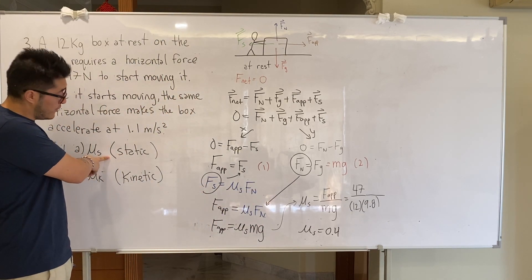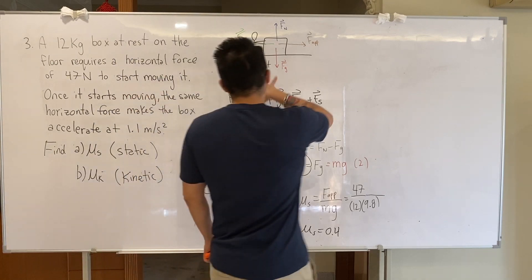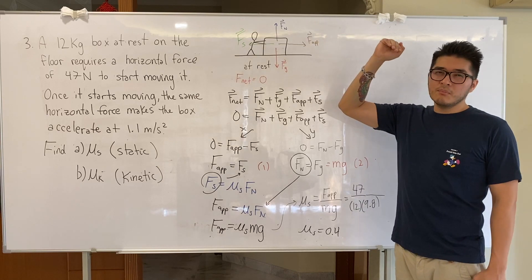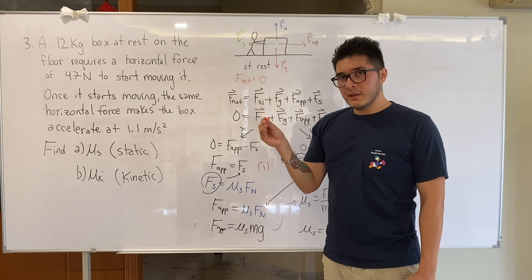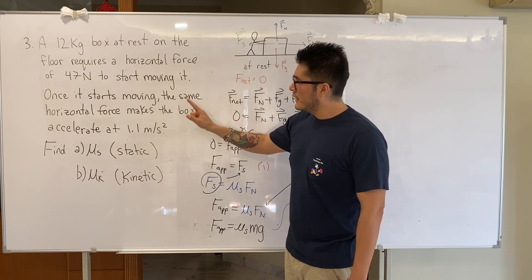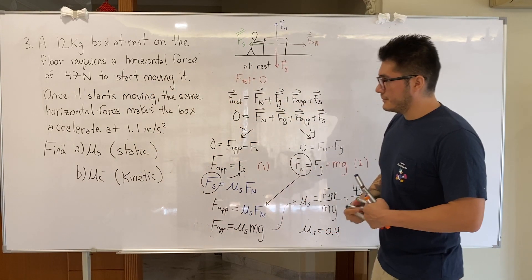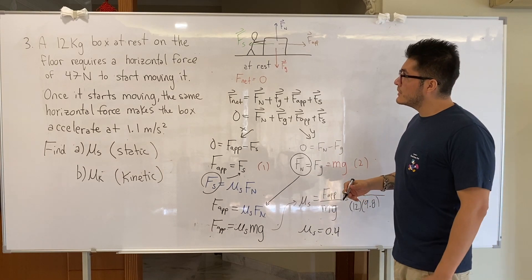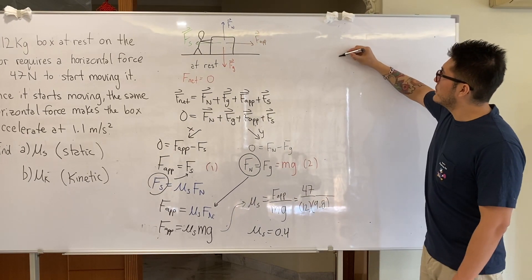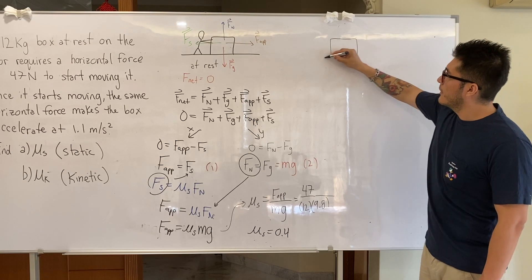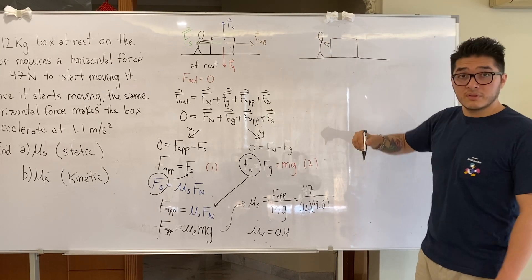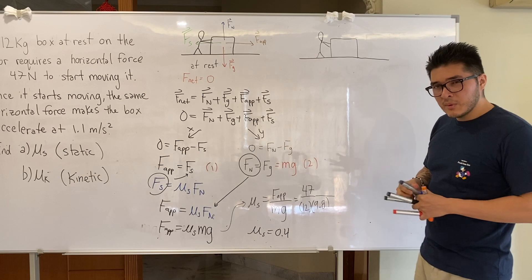Part a asked for the coefficient of static friction when the object is at rest. Once static friction reaches its maximum value and you push a little beyond that, the block starts moving. Now we draw the scenario for part b: the same horizontal surface, the same applied force, normal force up, and gravity down.